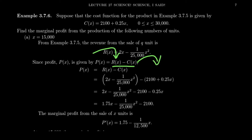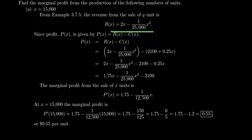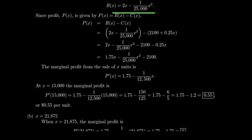Profit is the difference of revenue and cost. Cost is the money exiting the company, revenue is the money entering, and their difference is profit. We want profit to be positive — that's the goal. To compute the profit function, we take the quadratic revenue from before and subtract the linear cost. Combining like terms, the profit function comes out to 1.75x minus x-squared over 25,000 minus 2,100. This is a quadratic profit function, and by the derivative rules we know, we can easily compute its derivative.